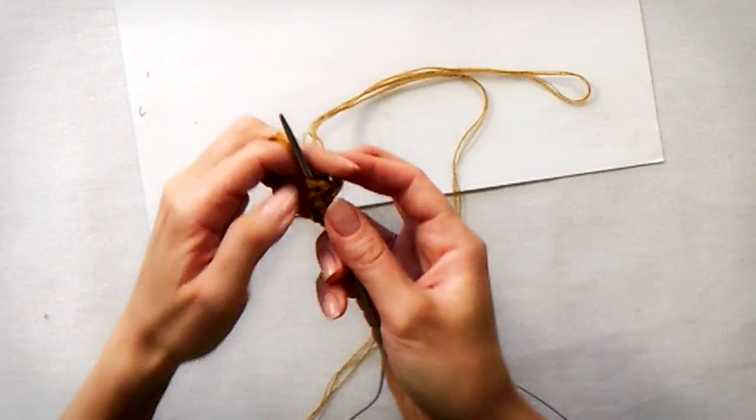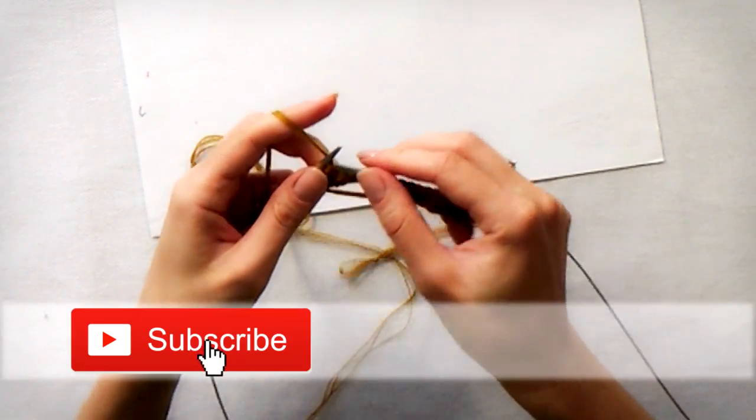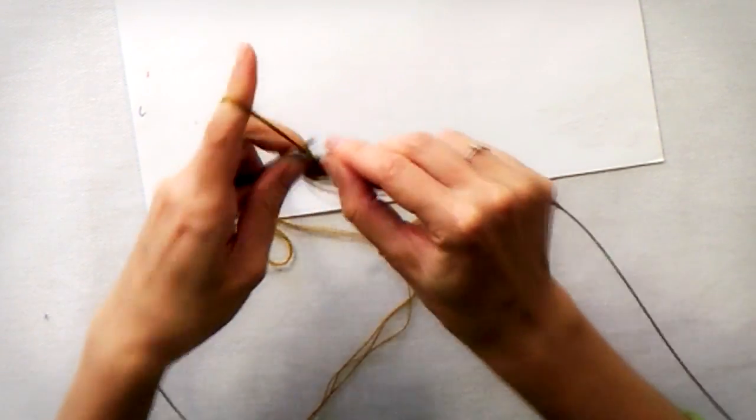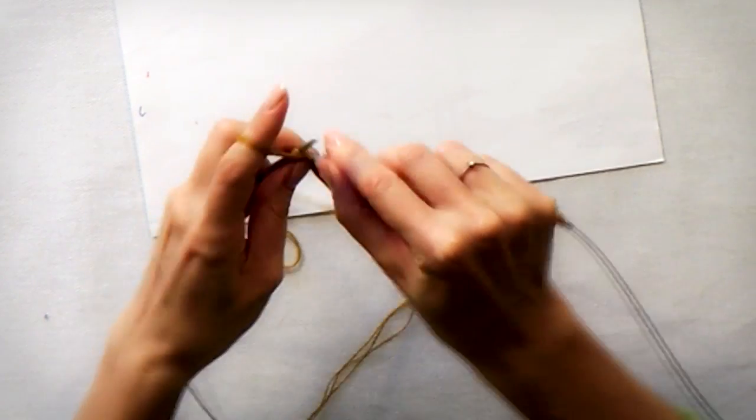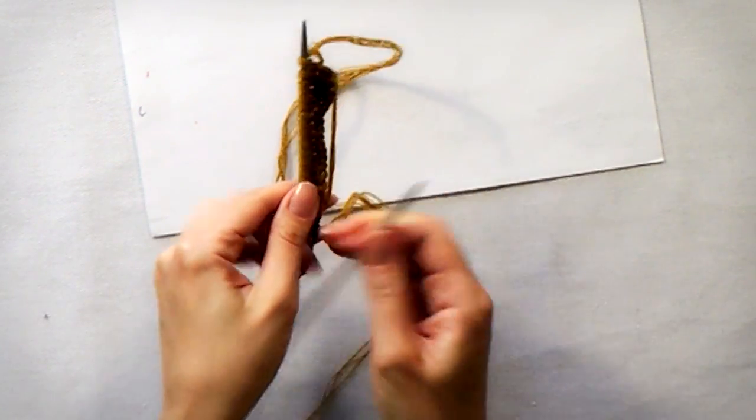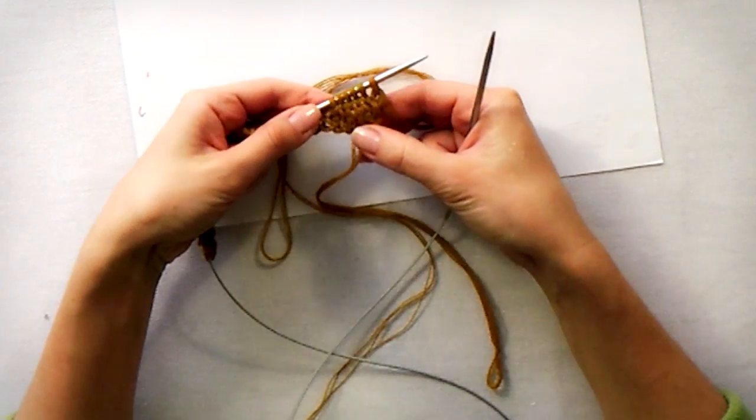Turn the work and purl your 6 stitches. Turn the work to the right. And now we made 2 rows of stockinette. Continue knitting it until you have 12 rows.